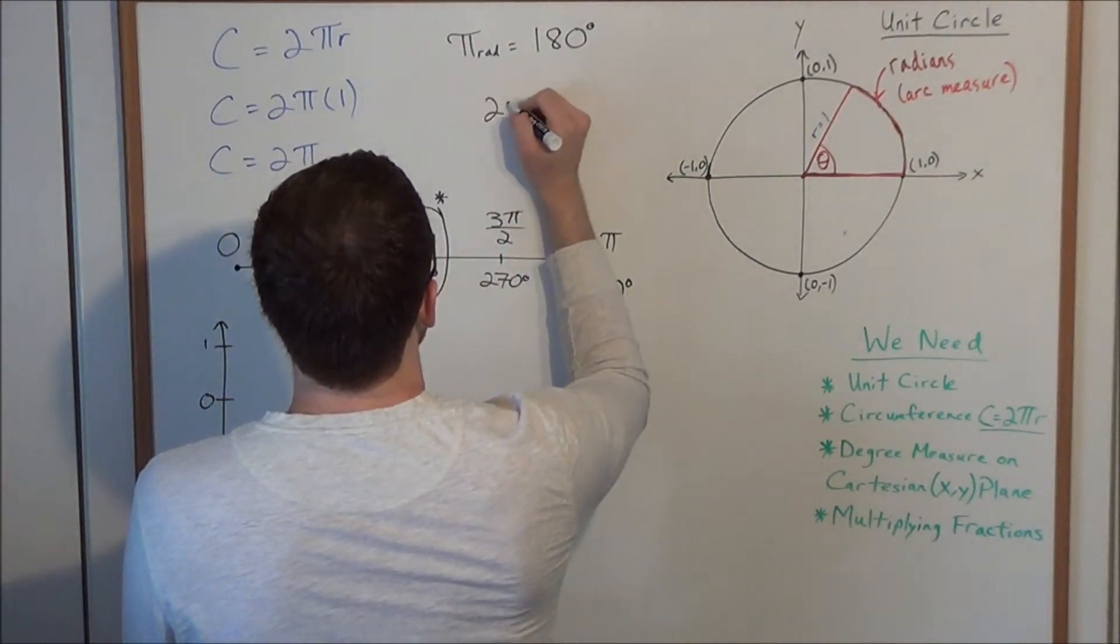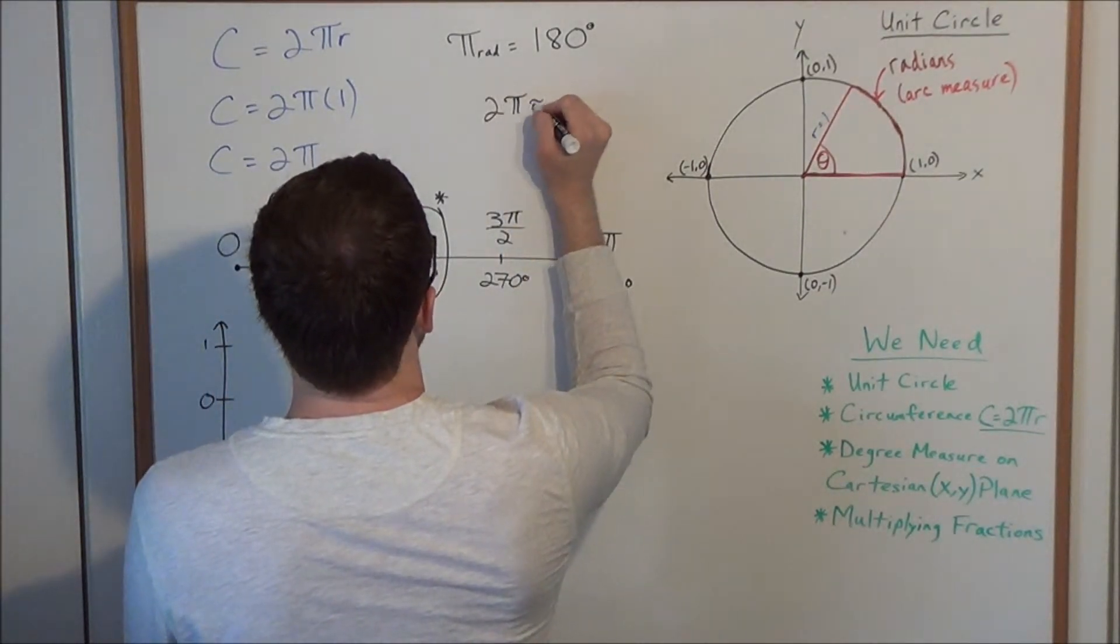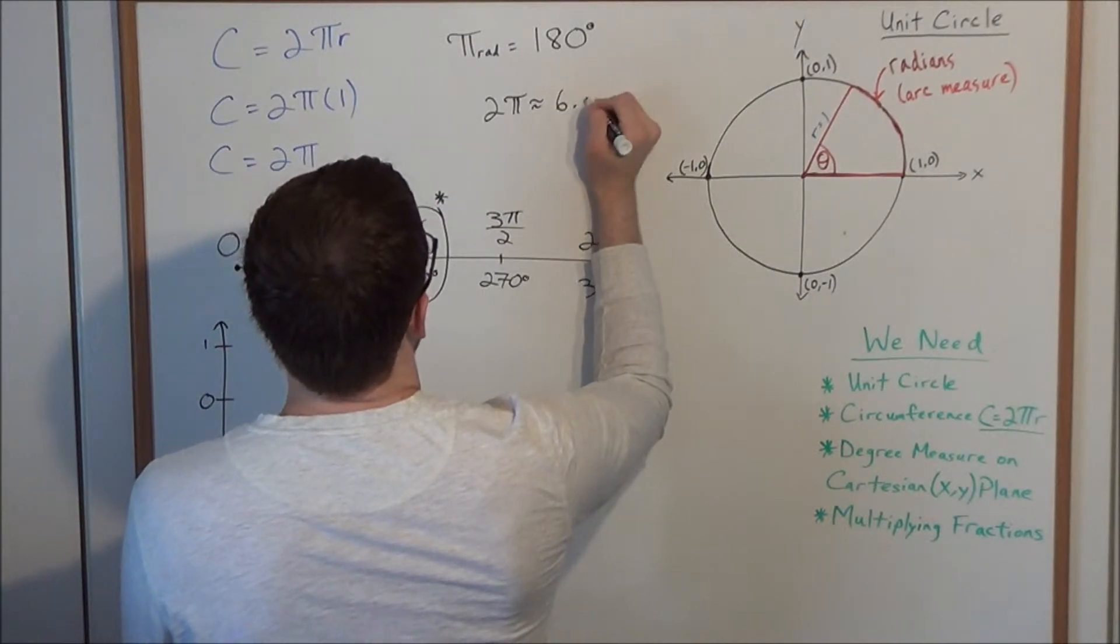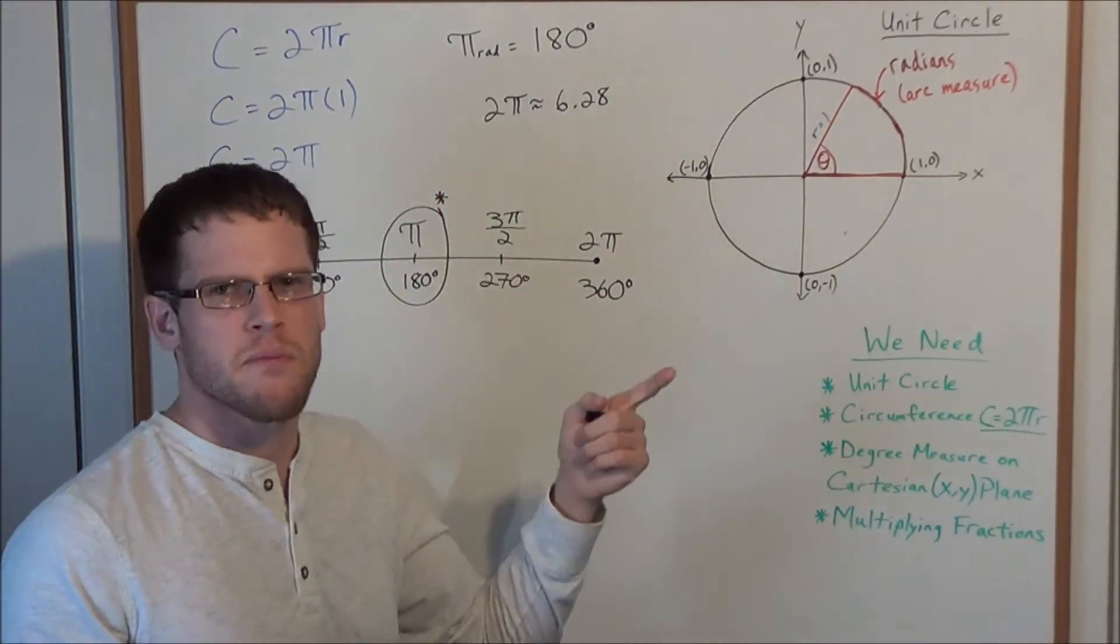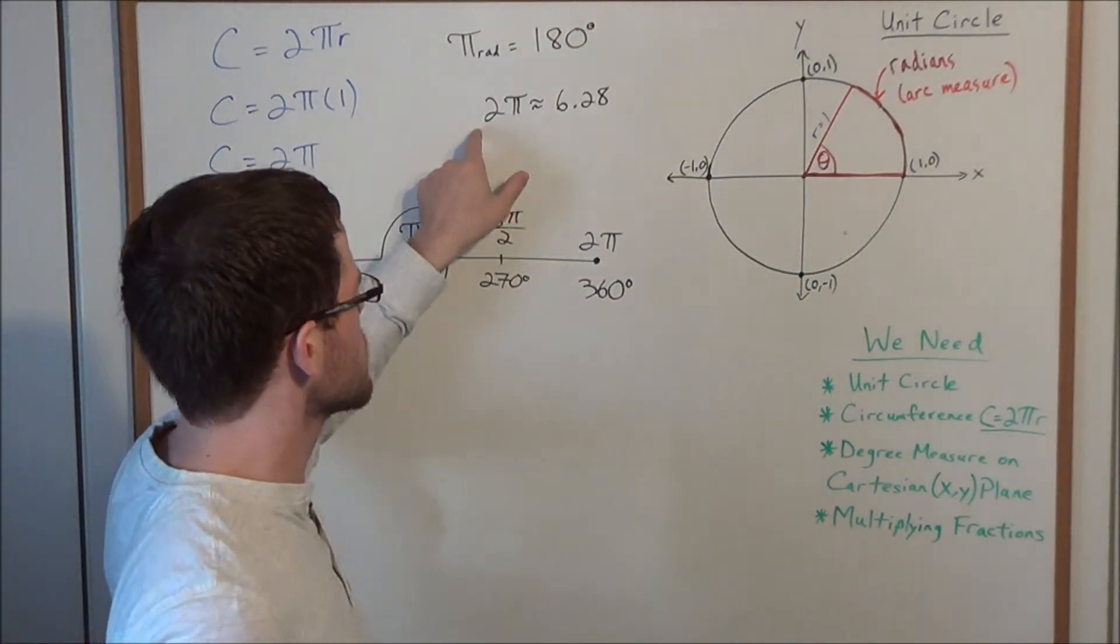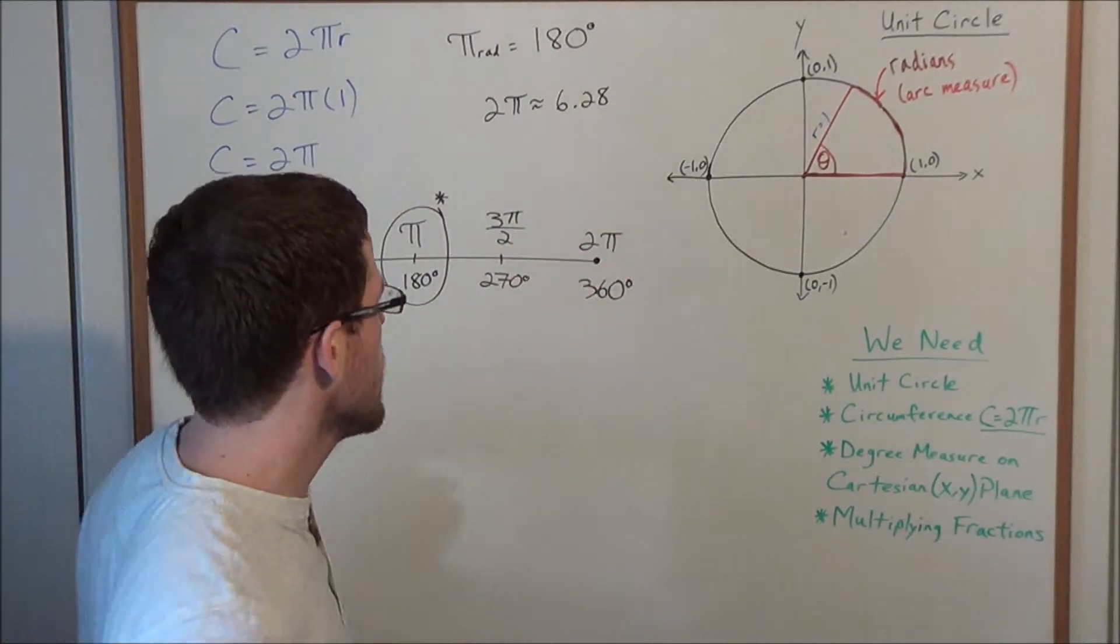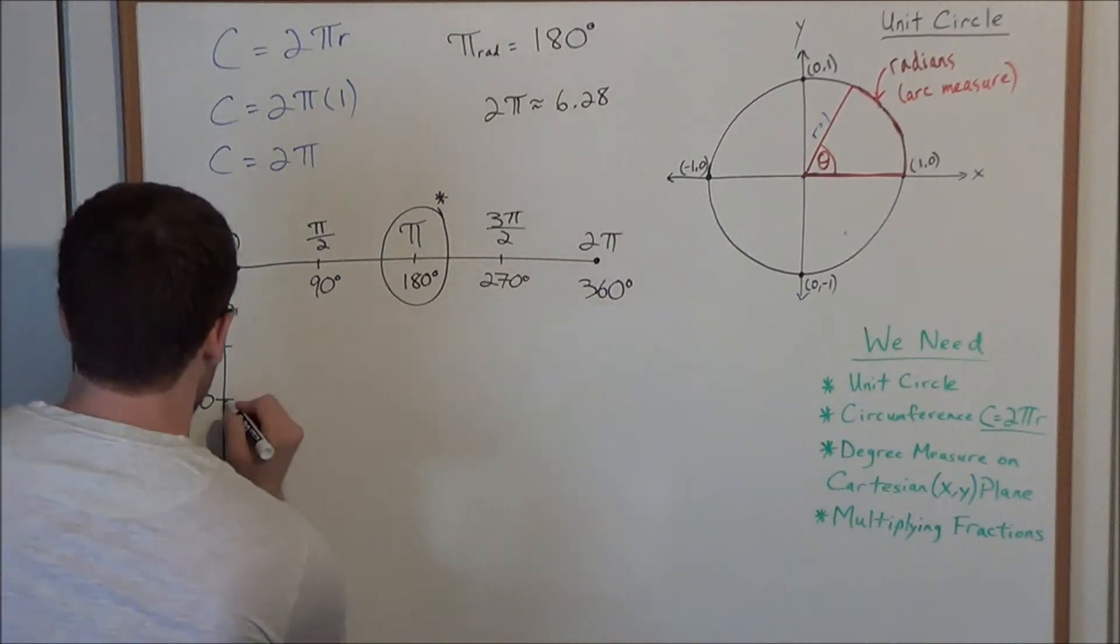But let's look, what is 2π radians? 2π radians, this is roughly 6.28. Keep in your mind that we can estimate π to be 3.14, so 2 times 3.14 would mean roughly 6.28.